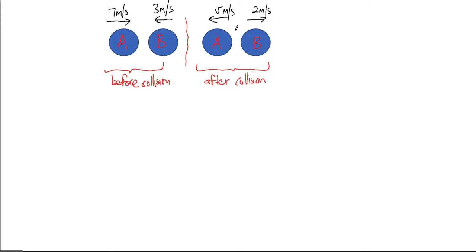But this time the speed has reduced for B from three meters per second to two meters per second. Now the question here: find what is the value of v.